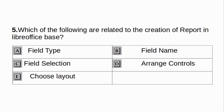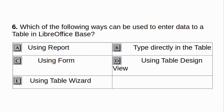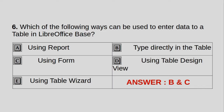Which of the following are related to the creation of report in LibreOffice Base? A. Field type. B. Field name. C. Field selection. D. Arrange controls. E. Choose level. Answer: C and E. Which of the following ways can be used to enter data to a table in LibreOffice Base? A. Using report. B. Type directly in the table. C. Using form. D. Using table design view. E. Using table wizard. Answer: B and C.